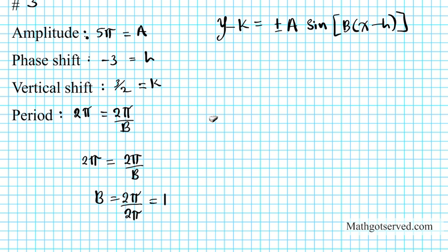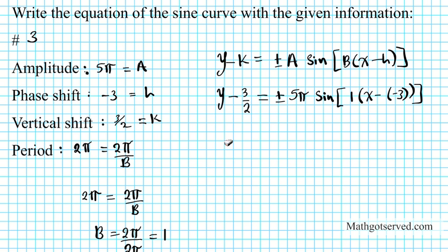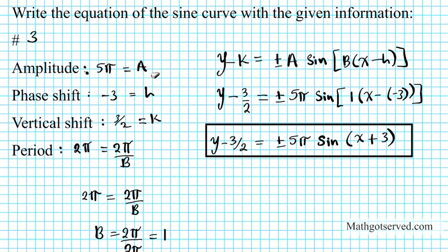Now we have enough information to generate the equation. We have y minus k, where k is 3 over 2, equals plus or minus a which is 5π, sine. B is just 1, so we can drop it. Times x minus h where h is negative 3. Simplifying, minus times minus becomes plus, giving y minus 3 over 2 equals plus or minus 5π sine bracket x plus 3. There goes the equation of the sine function with the given information.